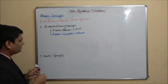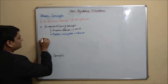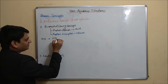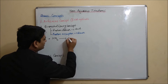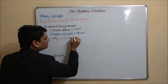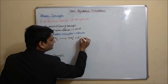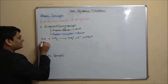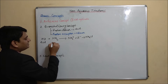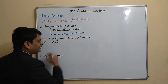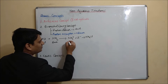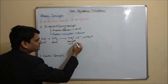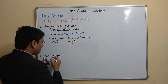Let's take an example. HCl and NH3 both will react and it will form NH4⁺ plus Cl⁻, which ultimately gives NH4Cl. So HCl is the acid, NH3 is the base, NH4⁺ is the conjugate acid, and Cl⁻ will be the conjugate base.